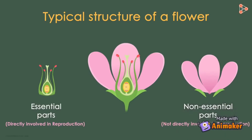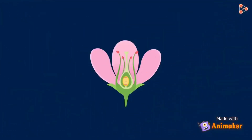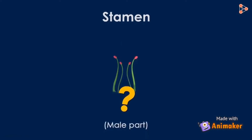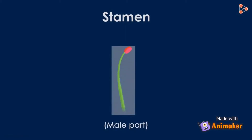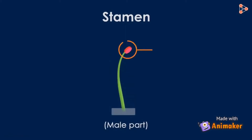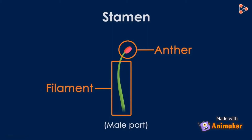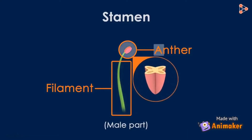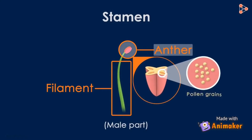Now let's discuss each part in detail. To begin with, we have the stamen, which is the male part. The stamen has two distinct parts: the anther and the filament. The part called the anther bears minute round bodies called pollen grains, which play an active role in reproduction.